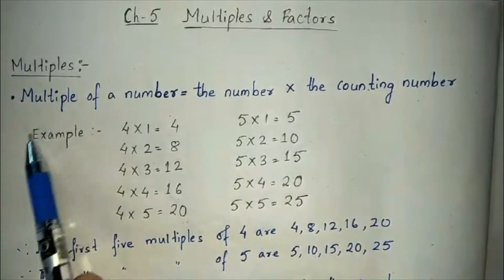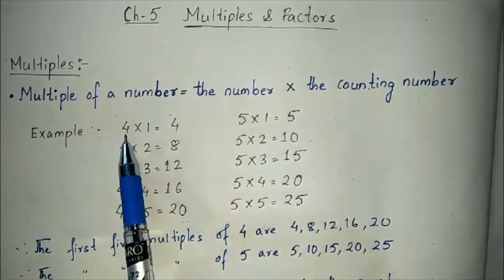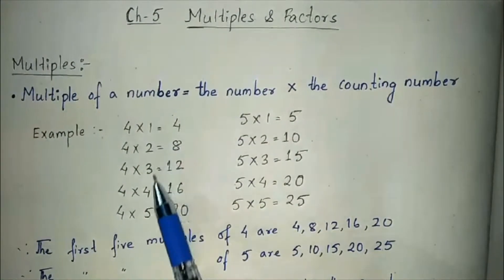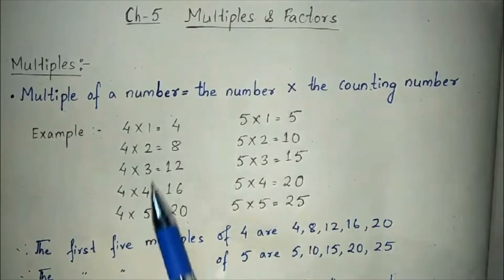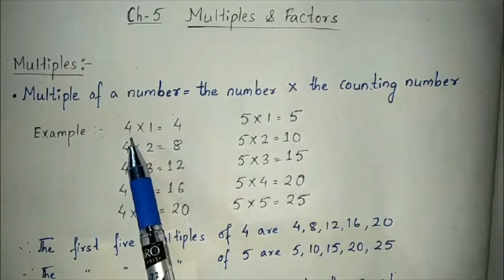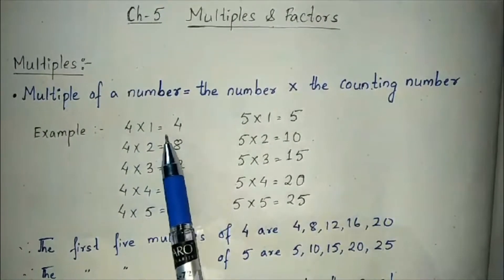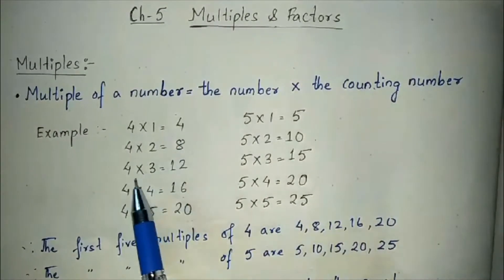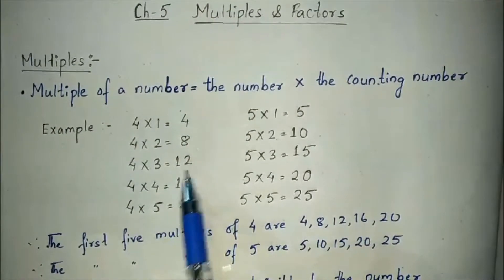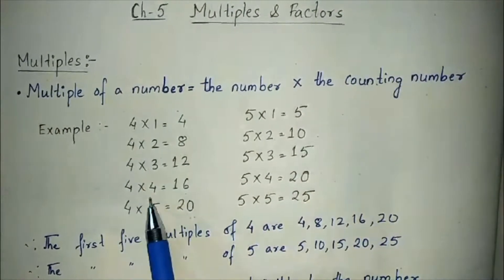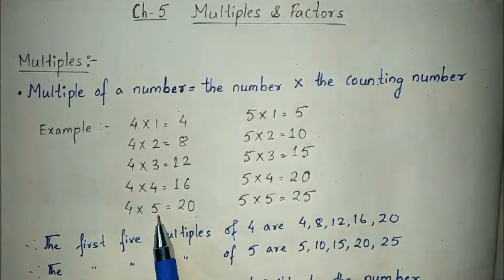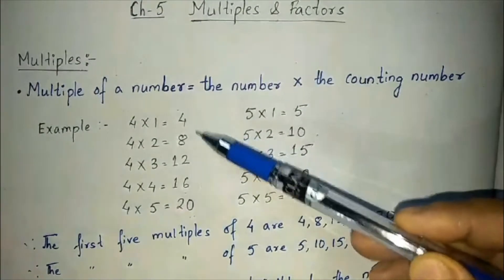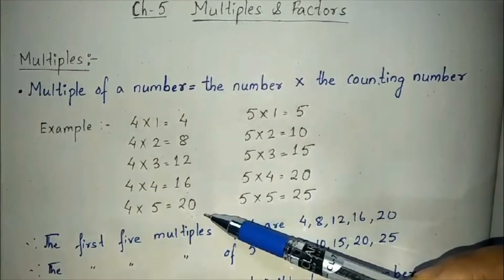To understand better, let us take an example of the numbers 4 and 5. When you multiply 4 with a counting number you get the product: 4×1=4, 4×2=8, 4×3=12, 4×4=16, 4×5=20. So these are all the first 5 multiples of 4.